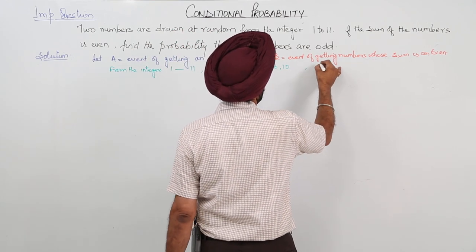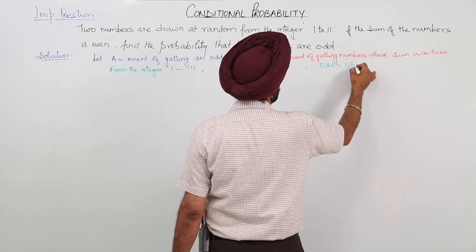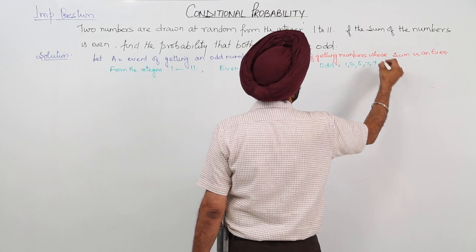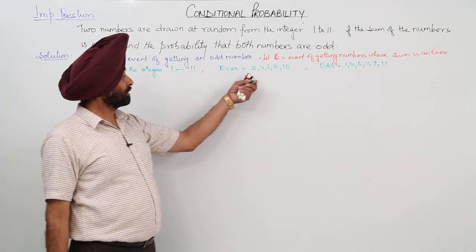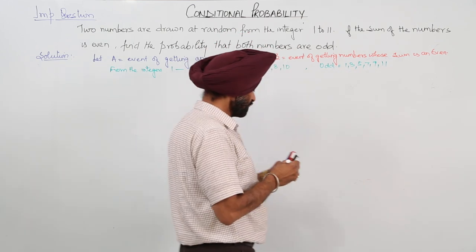And odd are 1, 3, 5, 7, 9, and 11. So even numbers are 5 in number and odd numbers are 6 in number. Is it clear?